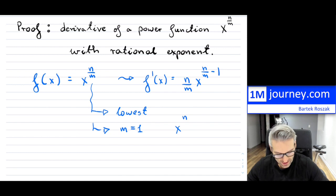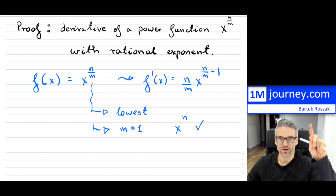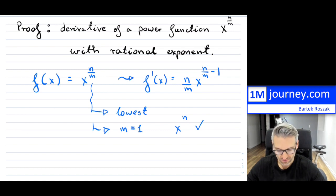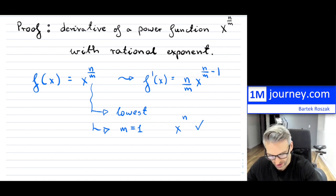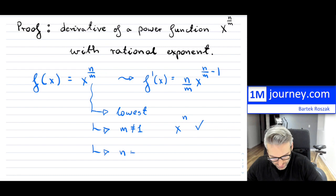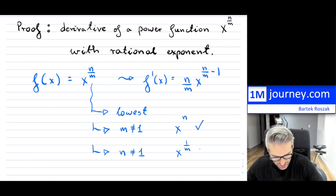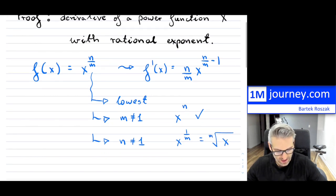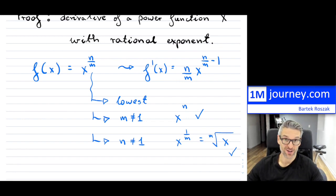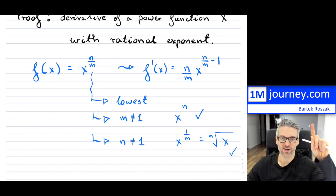If you want to see just that case, I'll put a link above, because I've done that proof. The other case we're excluding is where n is not equal to 1 either, so we're not running into 1/m, which is simply the mth root of x. I've done that proof as well and will link it above.